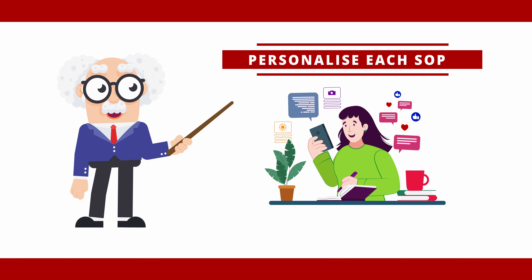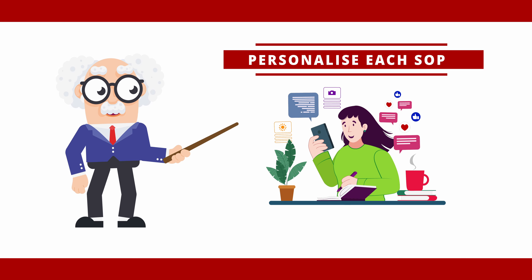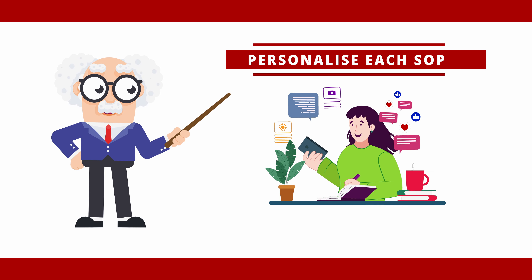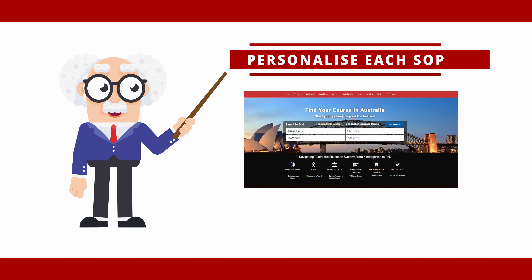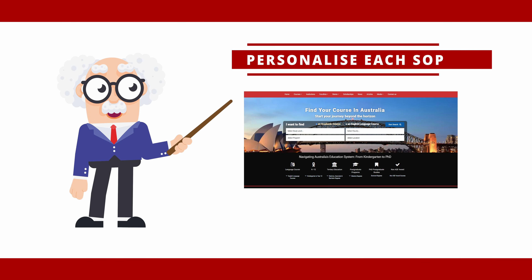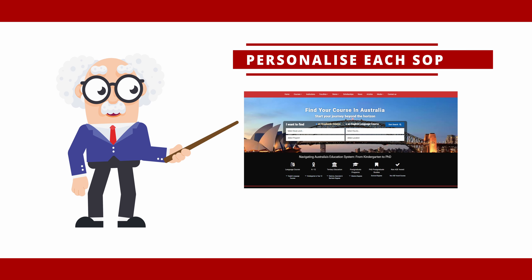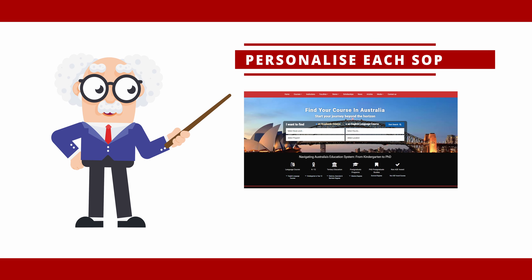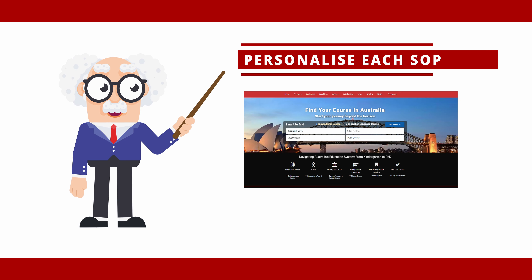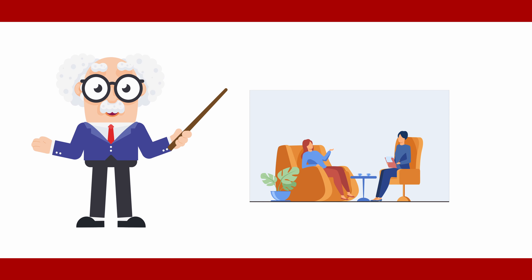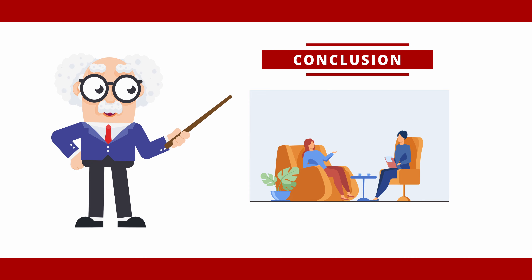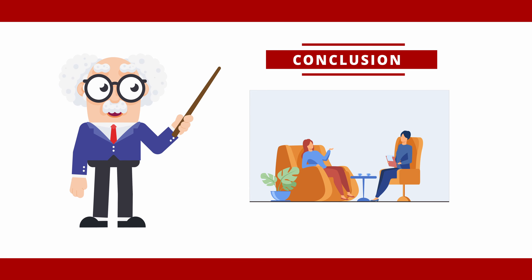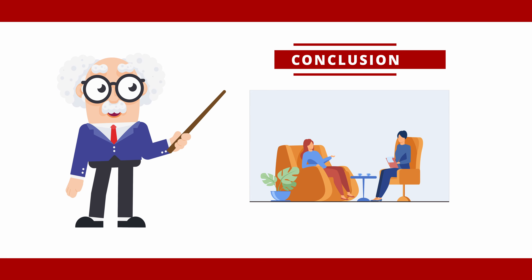Applying through United Education Group: if you've applied through United Education Group, one of our counselors will read your SOP before sending it to the university with your application. This is a final check to make sure you've covered all the key aspects before you apply.